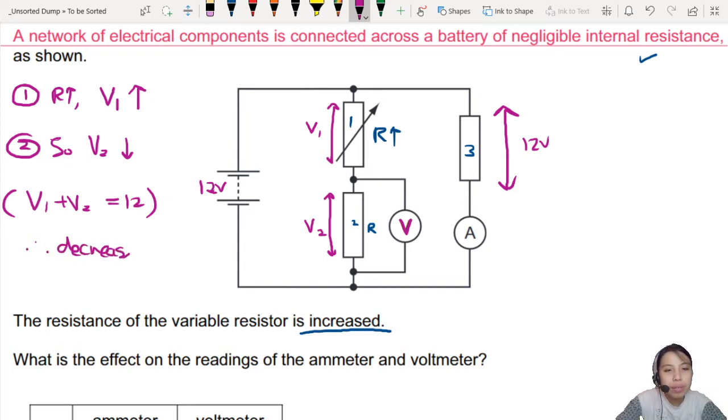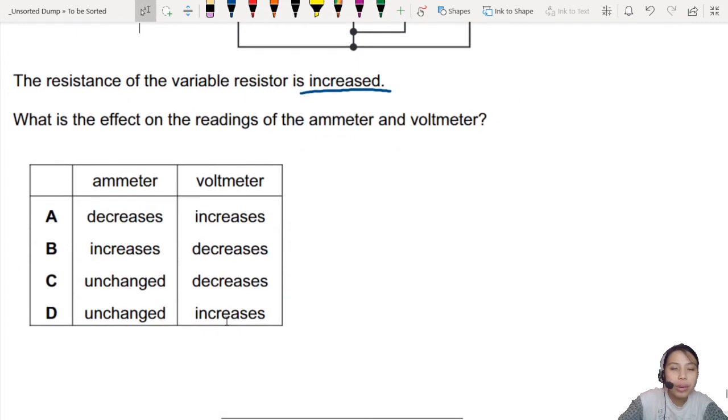We'll say it will decrease. So if you go down to the answers, you can already cancel out some stuff. Decrease. Ah, decrease. So probably not A, probably not D.